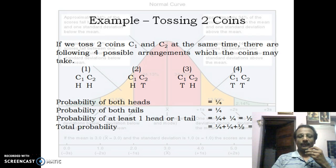Obtaining both heads is 1/4. Altogether there are four chances, in which 1/4 is the chance for two heads, 1/4 is the chance for two tails. But one head and one tail is 1/4 + 1/4, equal to half. The total probability is 1/4 + 1/2 + 1/4 = 1, as explained in this slide.